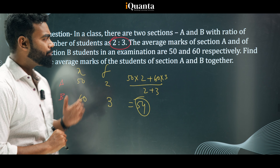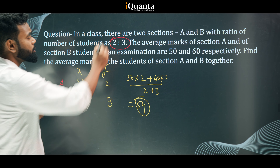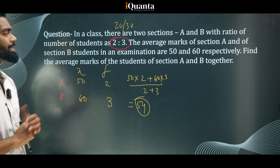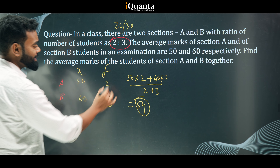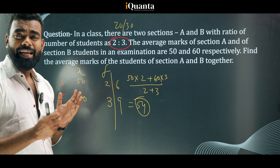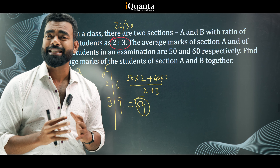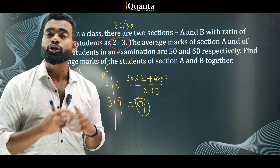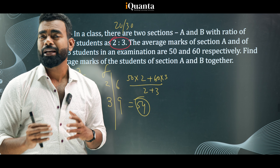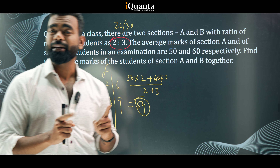Think about this carefully: in the previous question with frequencies 30 and 20 the answer was 54, and in this question with ratio 2:3 the answer is also 54. If you take 6 and 9, the answer is again 54. This means: if the ratio of frequency is the same, the average is the same. The average is not dependent on the quantity itself — it depends on the ratio of the quantities. So if you have the ratio, you can still find the weighted average.